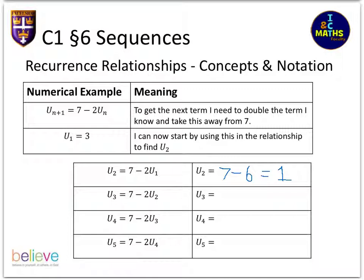The first one is seven take away two lots of u1, and u1 was three, so seven take away two lots of three, seven take away six which is one. The next one, u3, is seven take away two lots of u2, so seven take away two which is five. u4 is seven take away two lots of u3, seven take away ten so I get minus three. You just have to be really careful for the last one because I'm actually subtracting a negative number, so seven take away minus six which is the same as seven add six which is 13.